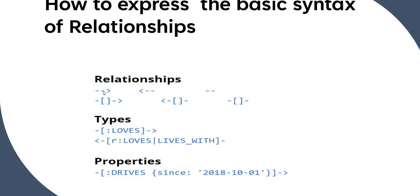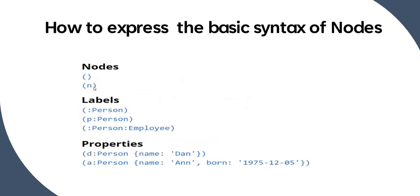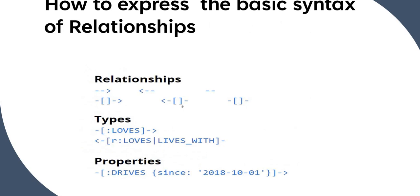When you don't know the relationship type between two nodes, you can use the arrow without specifying a type in square brackets. The key point to remember is that relationships are always written inside square brackets. To summarize: nodes are denoted in parentheses, properties are written in curly braces, and relationships are written in square brackets. Whatever data is inside the square brackets refers to the relationship.